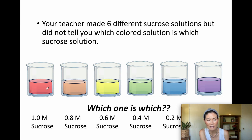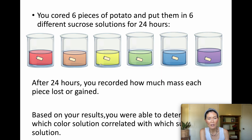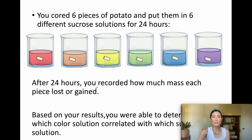You cut out six potato cores, massed them on a scale, recorded the mass, waited 24 hours, and then massed them again. Depending on which solution the potato core was in, it either gained or lost mass. Based on your results, you could determine which colored solution corresponded to which sucrose concentration.